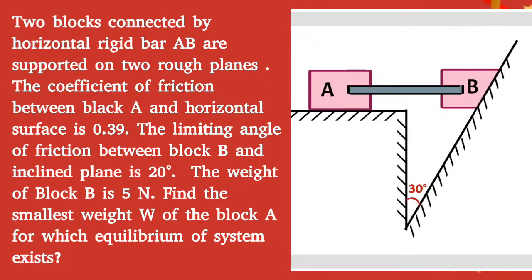Given question: two blocks connected by horizontal rigid bar AB are supported on two rough planes. The coefficient of friction between block A and horizontal surface is 0.39. The limiting angle of friction between block B and inclined plane is 20 degrees. Weight of block B is 5 N. Find the smallest weight W of block A for which equilibrium of the system can exist.